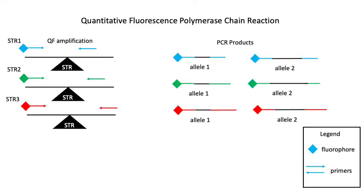Quantitative fluorescent PCR can differentiate between single and multiple copies of an STR by comparing the amount of fluorescence produced. QF-PCR is an endpoint PCR method in which the PCR products are labeled with a fluorophore and separated by capillary electrophoresis. It is used in the clinical laboratory to detect aneuploidy and in the forensic lab for identification.